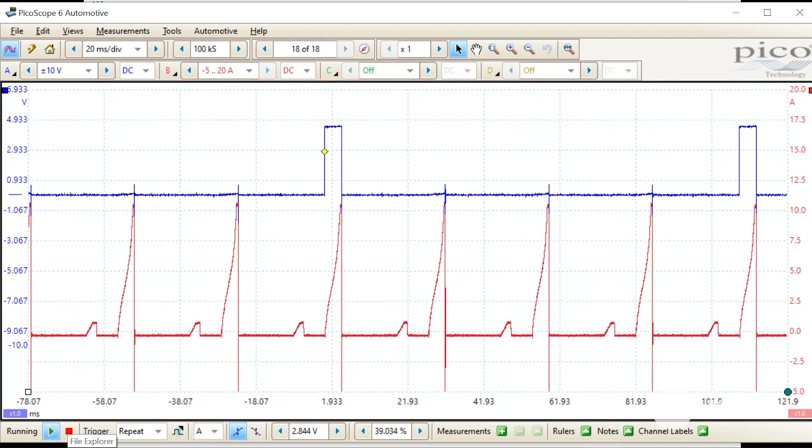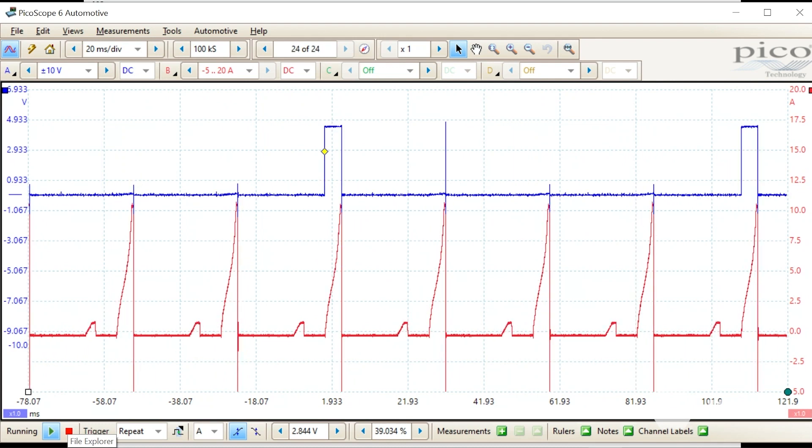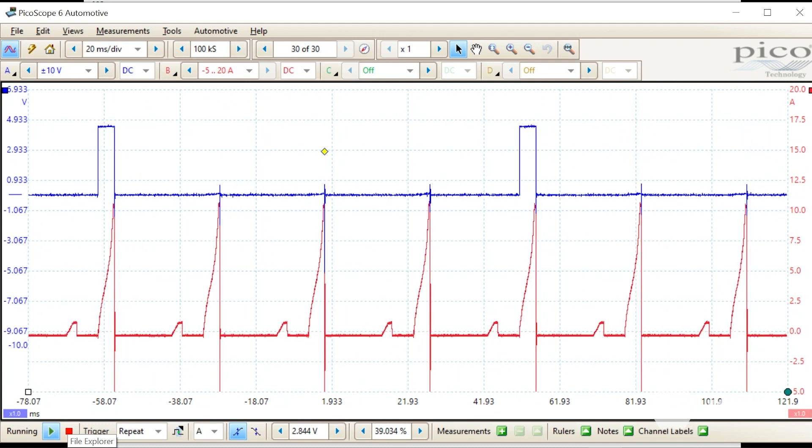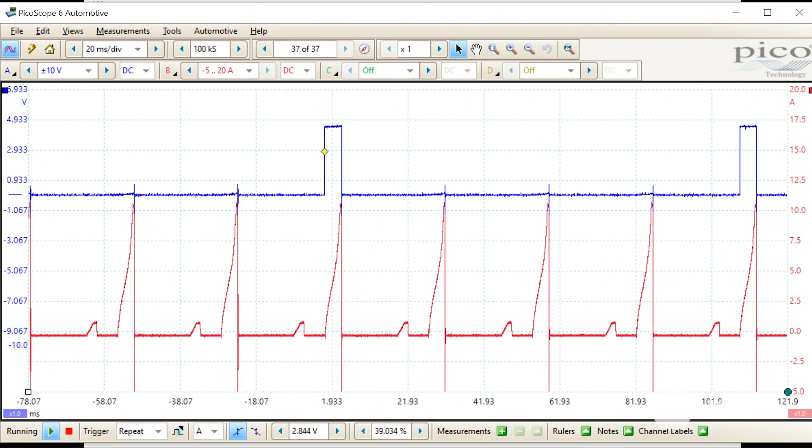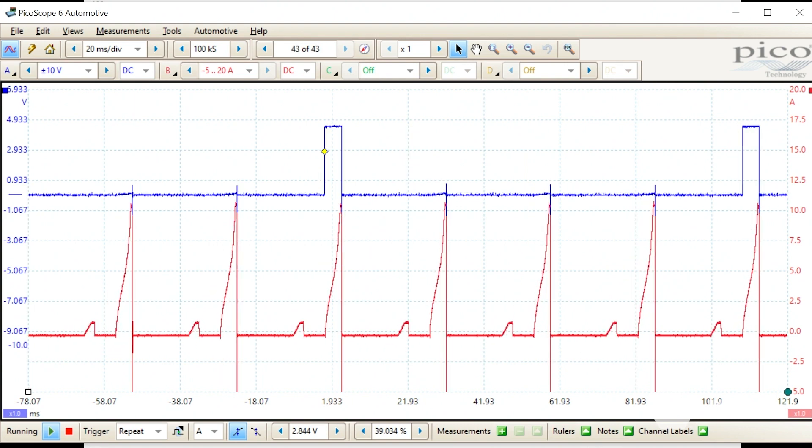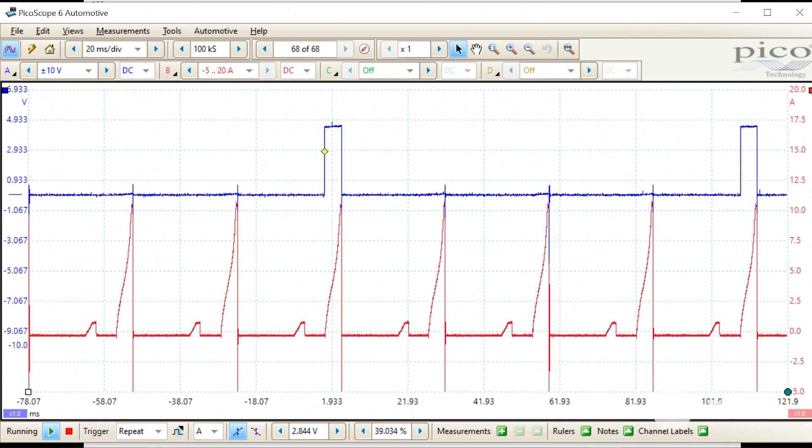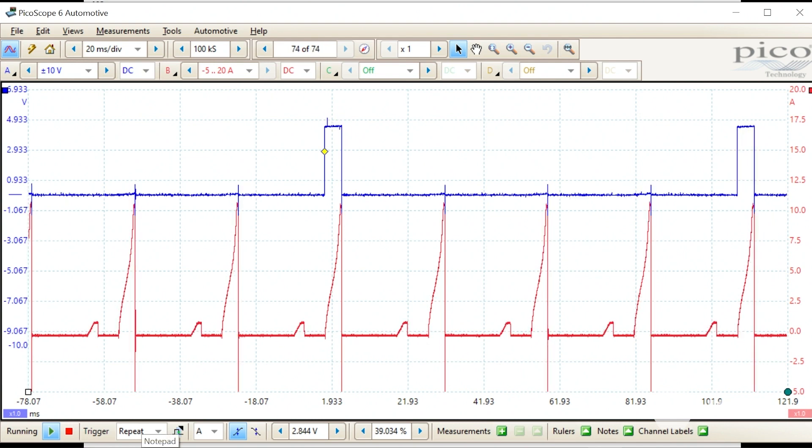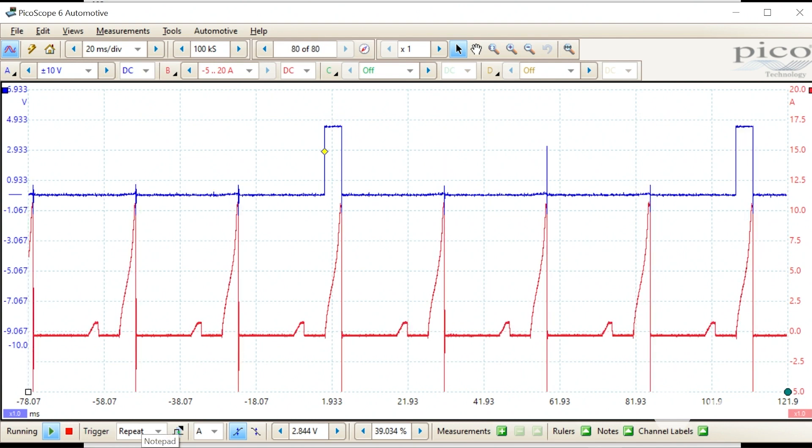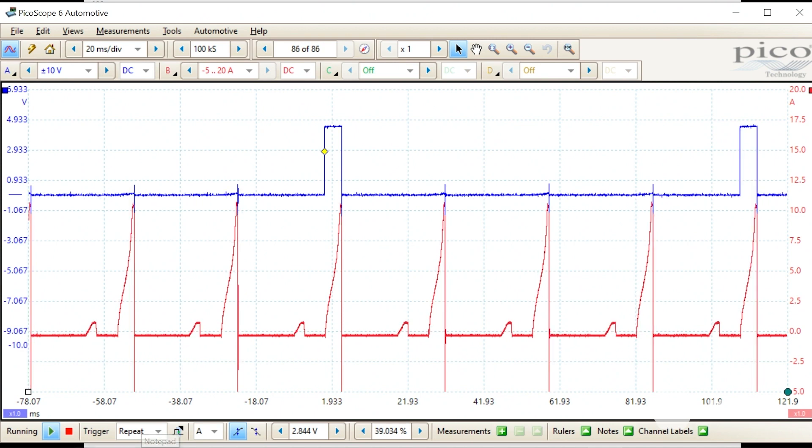I've got my scope running live. The top channel in blue is the IGT or ignition trigger from the ECM to number 3 ignition coil. That's the digital signal to command the ignition module to fire that coil. Knowing the firing order of this engine, 1342, I can identify all four of the current ramps parading across the screen.